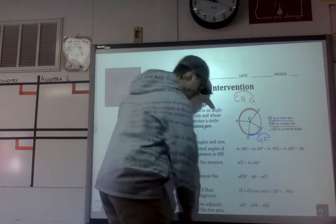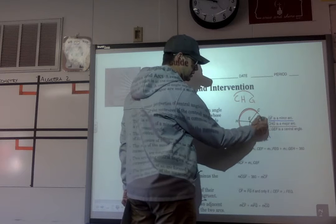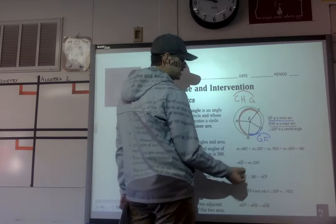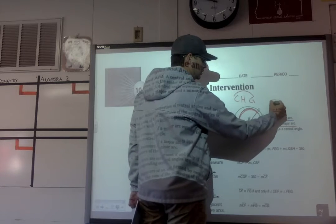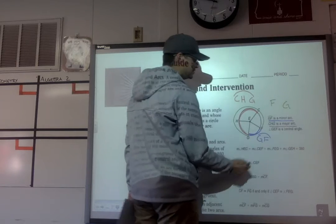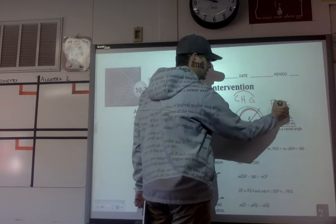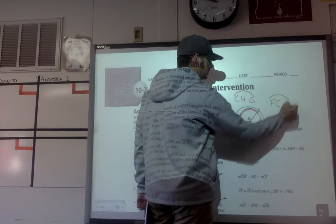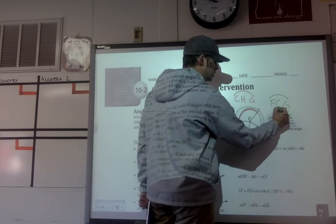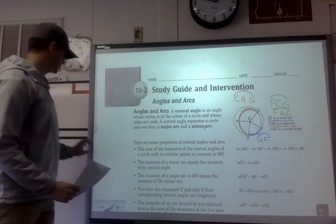So GF is a minor arc smaller than 180, and CHG is a major arc. Major arcs will always be named by three points — the first and last letters are the endpoints. If we did an arc with four points — F, C, H, and G — then you would put F and G as your first and last since they're the endpoints, and then put either C or H in the middle. So we could name it FCG or FHG. That's naming arcs.